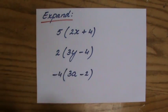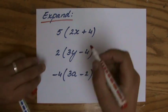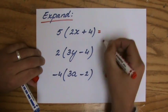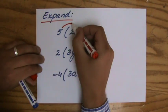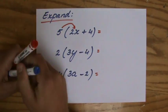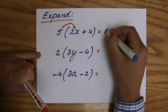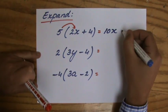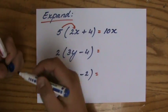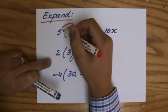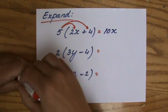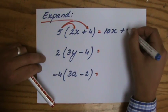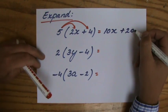5 bracket 2x plus 4, for instance. And we realize that that means times. So I have to do 5 times 2x. And that is 10x. And then some students write down plus 4 because they are so excited. But you should really calm down. Because you have to do 5 times all of the terms inside those brackets. So 5 times 4 is plus 20. Good.